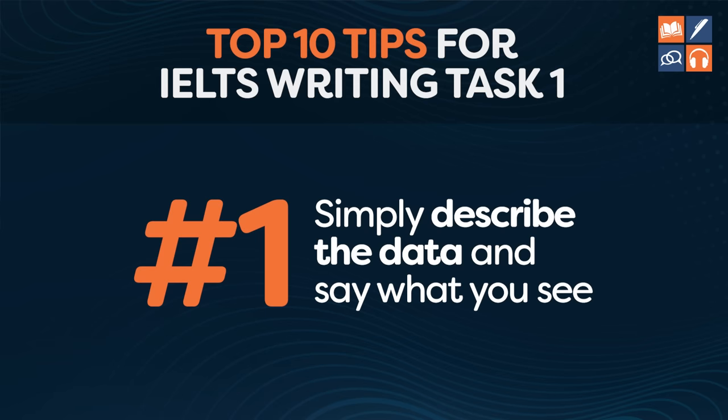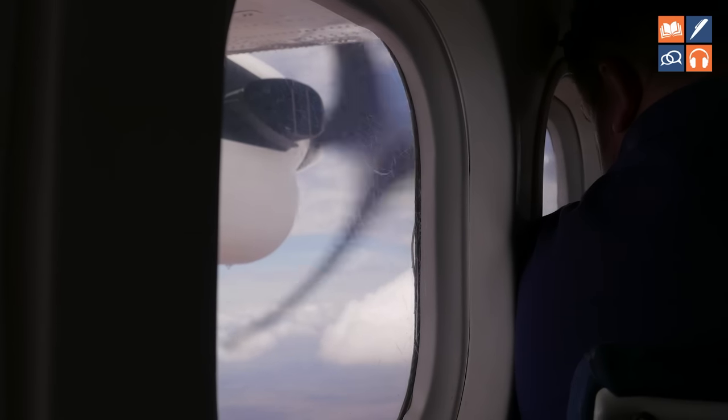Tip number one is to understand what the task requires you to do, which is simply describe information — say exactly what you see. When you move to a new country, you're going to have to look at information and convey it to other people. Do not make it more complicated than that. Many students spend half an hour looking at the data to find something that isn't really there. Students that get band eight or nine look at the data quickly, pick out the key things, and put them on paper. They are not going to give you higher marks for doing deep data analysis. It is not a PhD thesis — it is just testing your English level.